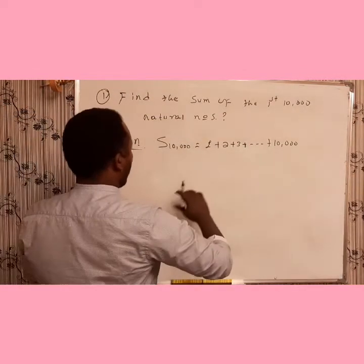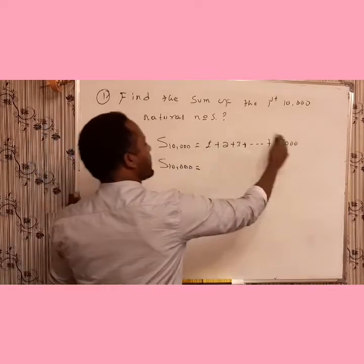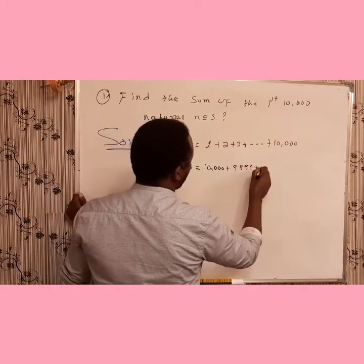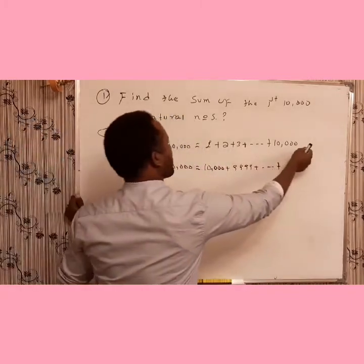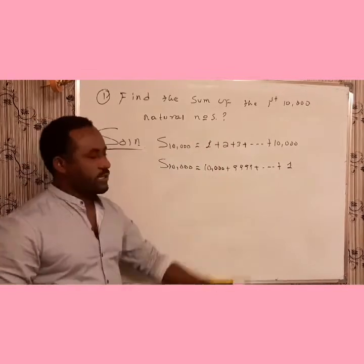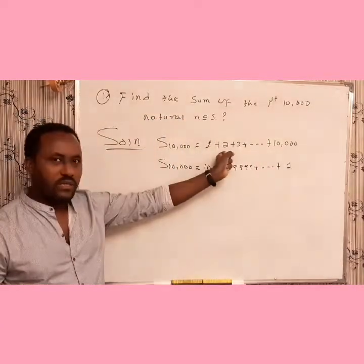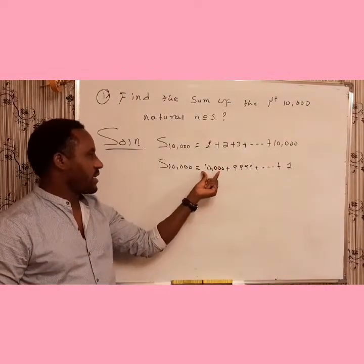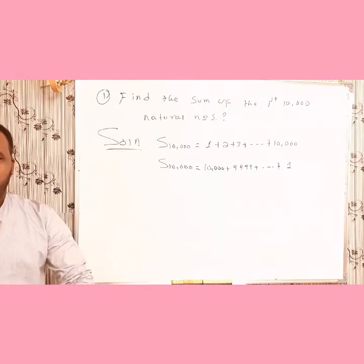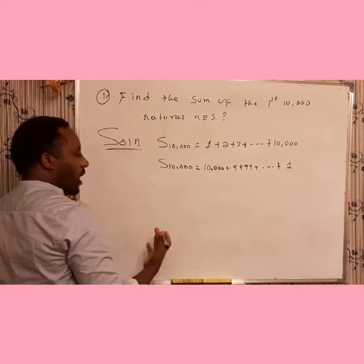S_10000 can be written in two ways: as 1 + 2 + 3 + ... + 10,000 in increasing order, and also as 10,000 + 9,999 + ... + 1 in decreasing order. Since the common difference between terms is the same — that is, one — if the first number is 10,000, the next will be 9,999, decreased by one.